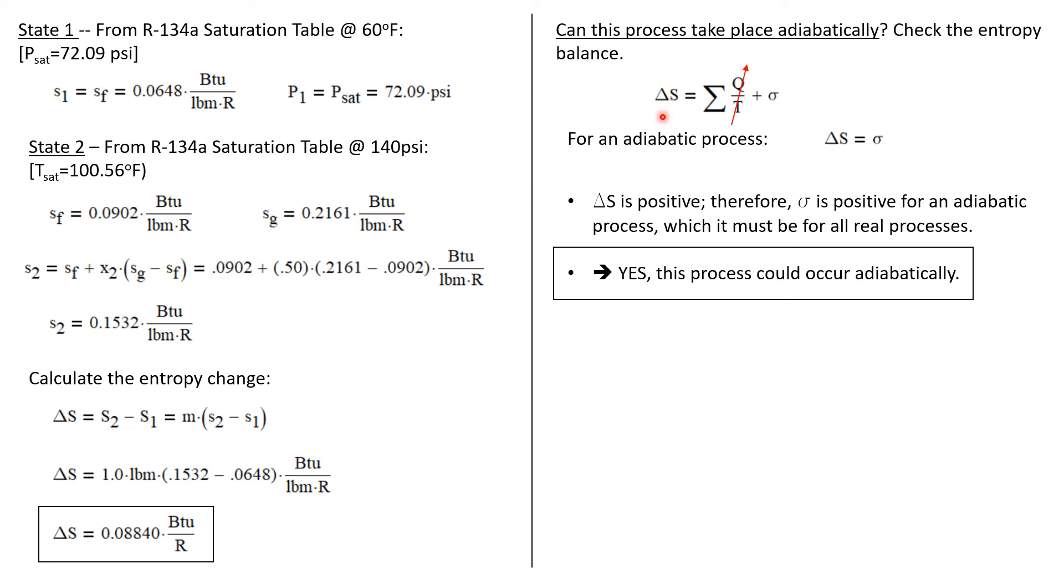So our entropy balance is just that ΔS, the change in entropy during a process, is the sum of Q/T, so that would cover entropy transferred into the process by heat transfer, and then plus σ, the entropy production.